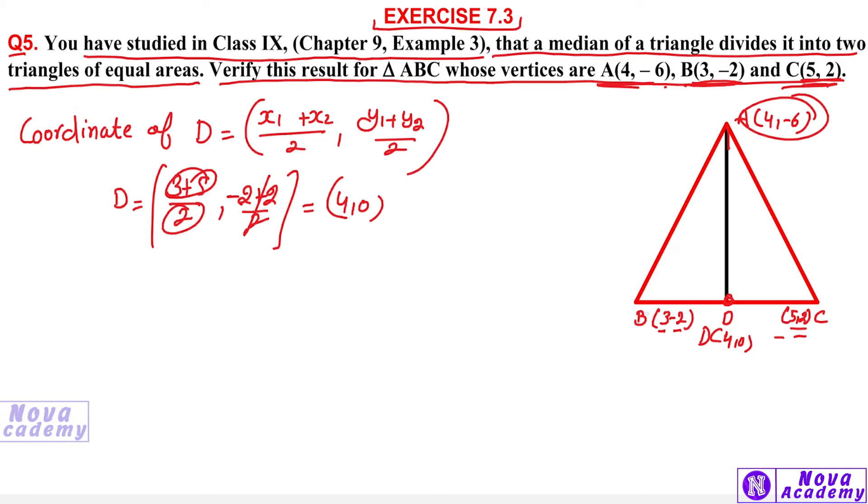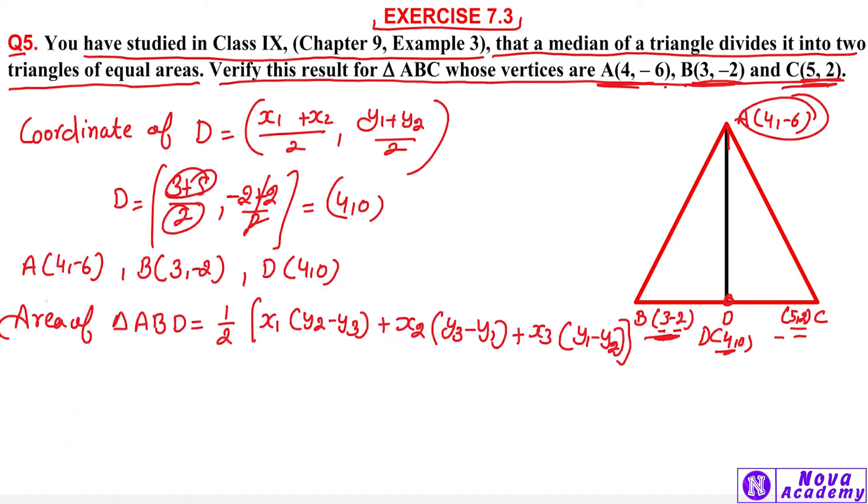We will calculate area of triangle ABD. A point we have (4, -6), B point we have (3, -2), and D point we have (4, 0). For the area, we will use the formula with x1, y1, x2, y2, x3, y3. We will put 1 upon 2, x1 is 4, y2 is -2, y3 is 0, x2 is 3, y3 is 0, y1 is -6, x3 is 4.